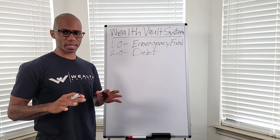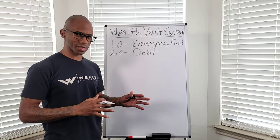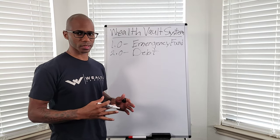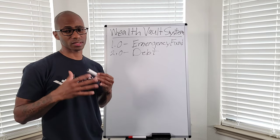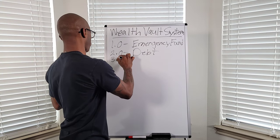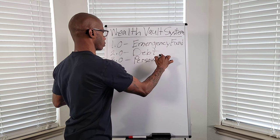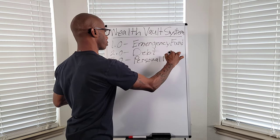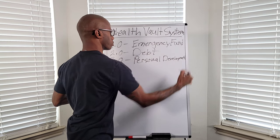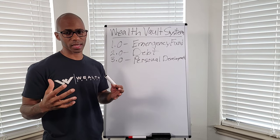There are two accounts that you set up with this system, so you'll add that with your regular expenses and all of the other accounts you've created with traditional budgeting. WealthVault 3.0, level three, is dedicated to your personal development, and this also has two accounts.